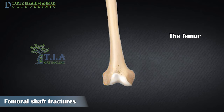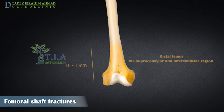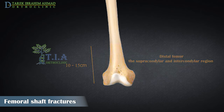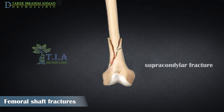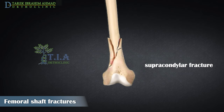The distal femur includes both the supracondylar and condylar regions. The supracondylar area of the femur is the distal 10 to 15 centimeters of the femur. Distal femur fractures include fractures of the supracondylar and intercondylar region of the distal femur and are relatively common injuries.